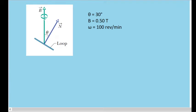That normal vector is at an angle theta of 30 degrees from a magnetic field with a magnitude of 0.50 teslas.